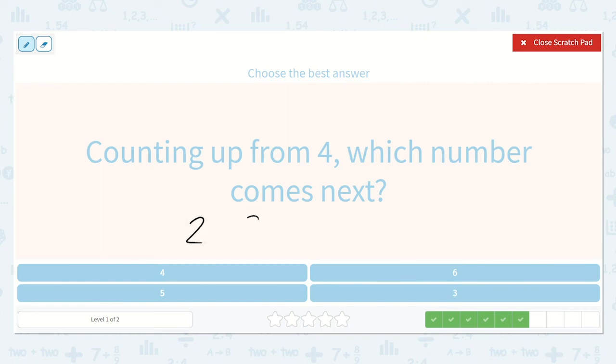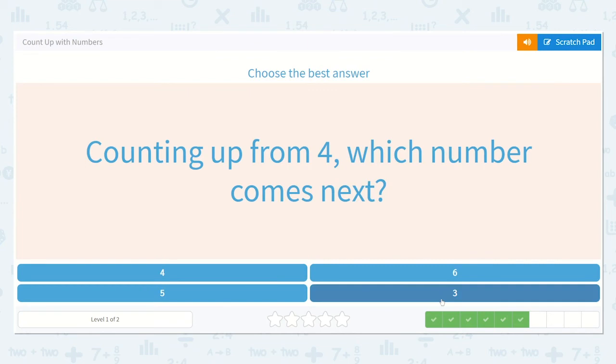So two, three, four. All right, two, three, four, five. So I know that five, it comes right after four. All right, let's choose five.